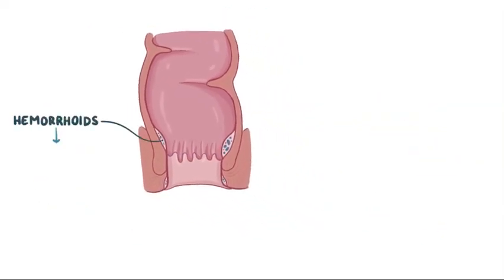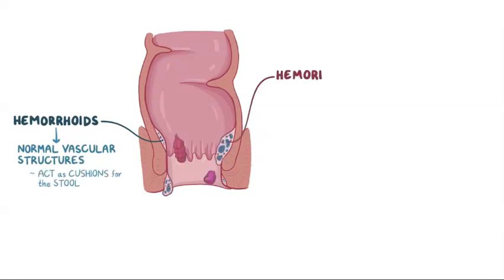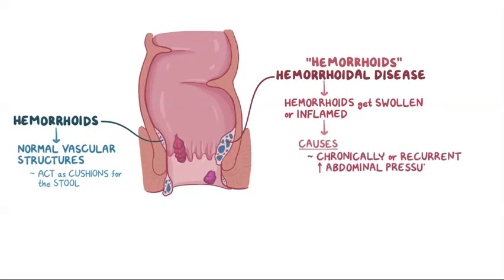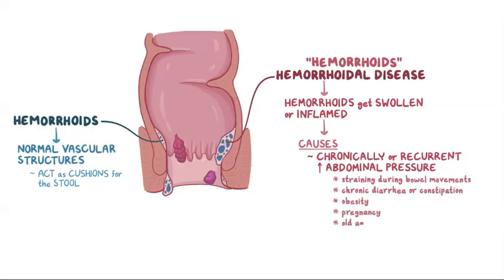Hemorrhoids are normal vascular structures in the anal canal that act as cushions for the stool as it passes through. Hemorrhoidal disease is when hemorrhoids get swollen or inflamed, but the term hemorrhoid is often used to refer to the disease. Hemorrhoids are often caused by chronically or recurrently increased abdominal pressure, for example, from straining during bowel movements, chronic diarrhea or constipation, obesity, pregnancy, and old age.